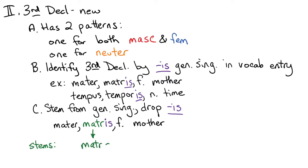See if you can correctly find the stem for tempus, temporis, neuter, time. If you found it correctly, it is T-E-M-P-O-R after we drop the -is. So we've talked about how to identify a third declension noun and how to find its stem.